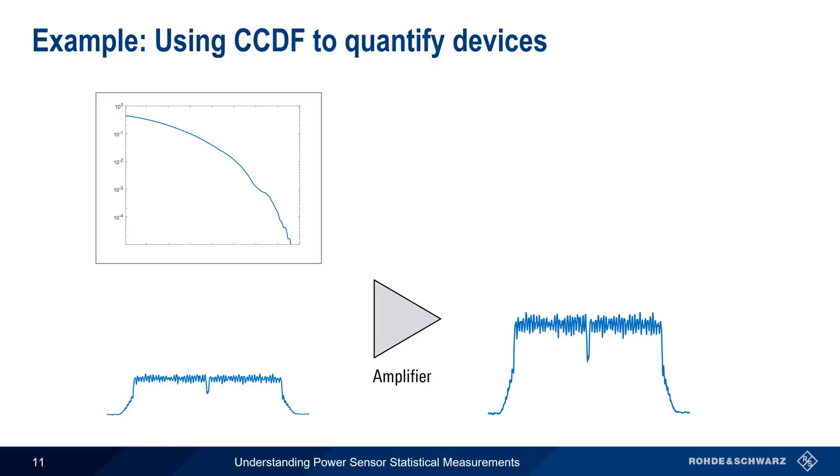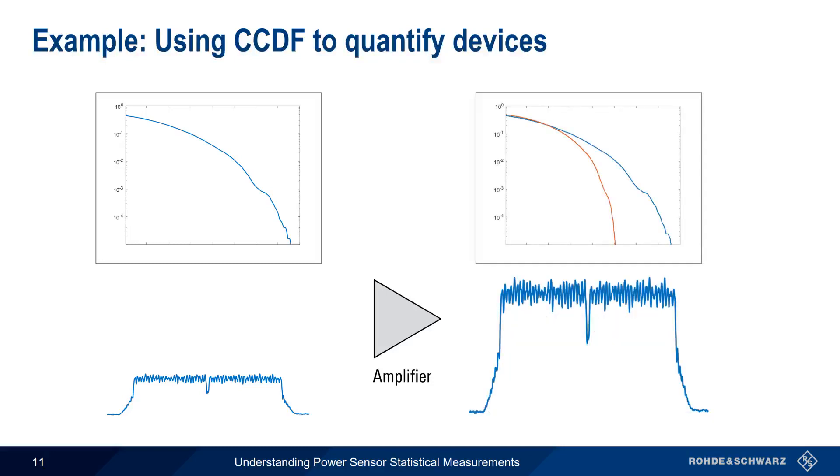On the other hand, if the amplifier output is distorted, the CCDF curves will be different. In this particular case, the reduction in CCDF between the input and the output shows that the amplifier has gone into compression. The same methodology can be used with many other active and passive components.